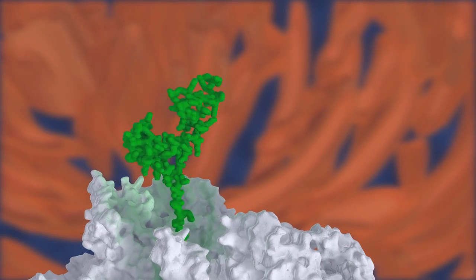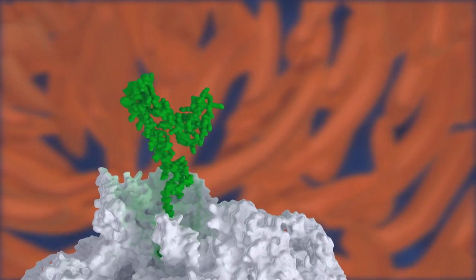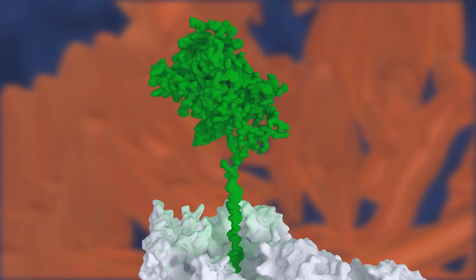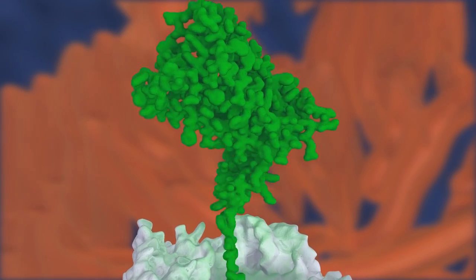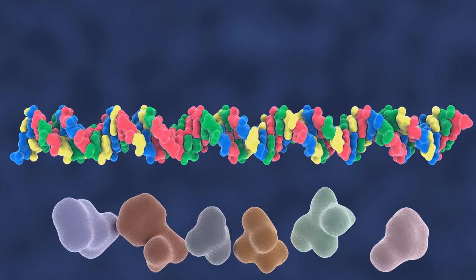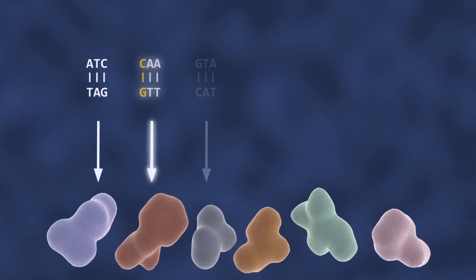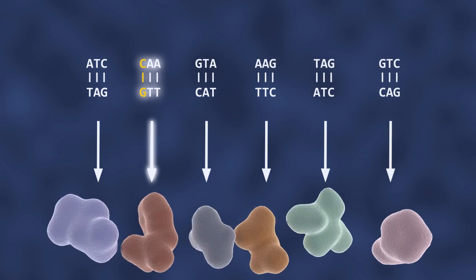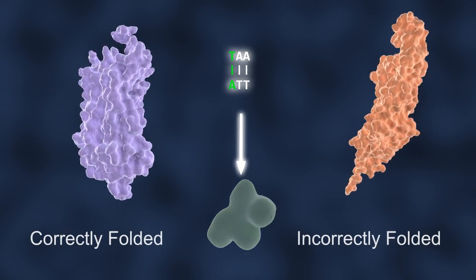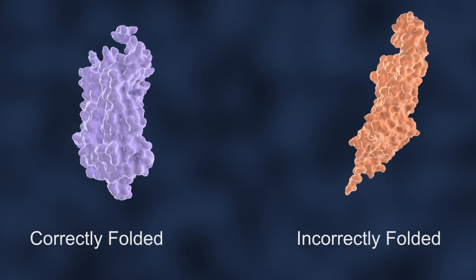However, while some mutations provide the richness of human existence, others can be harmful. Mutations in DNA can also lead to the production of proteins that do not function correctly. Remember that the function of a protein is defined by its amino acid sequence and consequent shape. So a different base in DNA can result in a different amino acid in a protein, and this can disturb the shape and function of the protein. Many inherited diseases are caused by such changes.